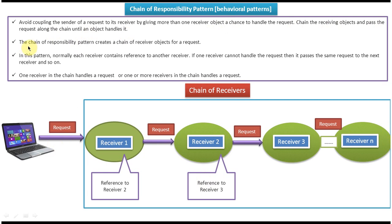The second explanation: the Chain of Responsibility pattern creates a chain of receiver objects for a single request, where multiple receivers are chained together to handle the request. The third explanation: normally each receiver contains a reference to another receiver — receiver one has a reference to receiver two, receiver two has a reference to receiver three, and so on.